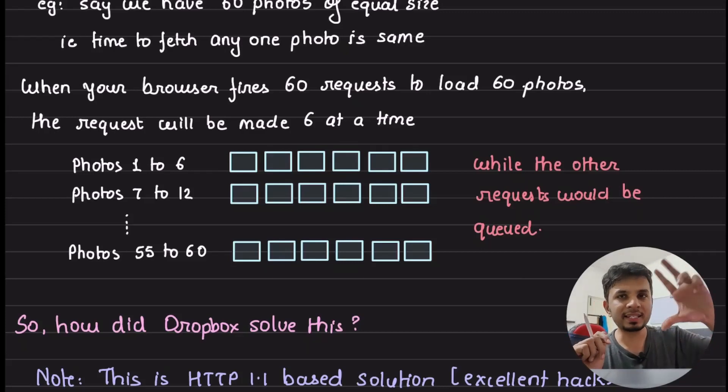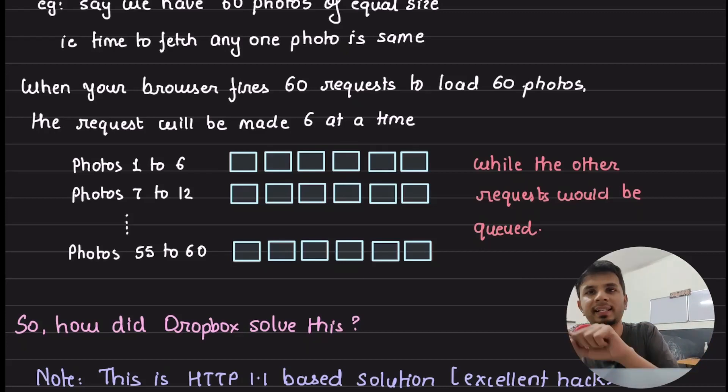When you are making 60 requests at that exact same time, what would happen? 6 would be initiated, other 54 would be waiting. Then when one of those 6 gets completed, then one of those which are waiting gets picked up and gets executed. If I assume that the time to fetch every photo or every thumbnail is exactly the same, it would happen first 6 would take place, then second 6 would go in, then third 6 would go in and so on and so forth.